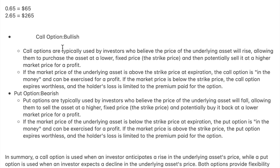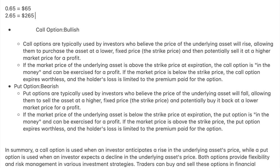There's also in the money, out of the money, and at the money. So if the current stock is at $50 and you're buying a $50 option, then that's at the money. Out of the money is when you're buying above the current strike price — so if the stock is at $50 and you're buying a $55 strike price option, that's out of the money. In the money is when you're buying a $45 strike price — that's in the money.